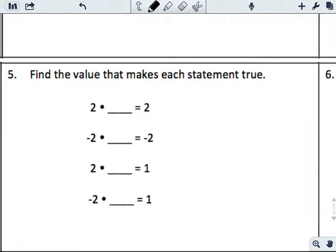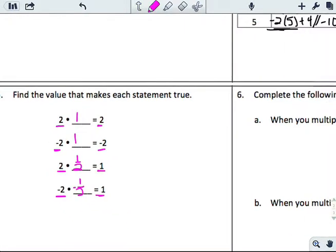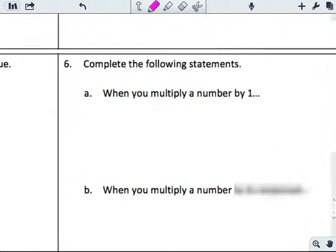Let's find a value that makes each of these statements true. Start with n and end with the same number, so it has to be 1. Start with 2, end with 1, I have to cut that in half. Negative 2 to end up with 1, I also change the sign so it's going to be negative 1.